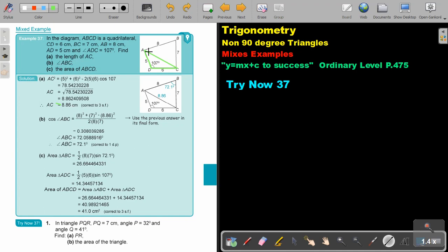Then, angle ABC. Now, don't forget that now I will work in this triangle. And don't forget that you have this value now. So you have to write it in. And you can use the 3 significant figure because you are in a separate part of the question. 8.86.